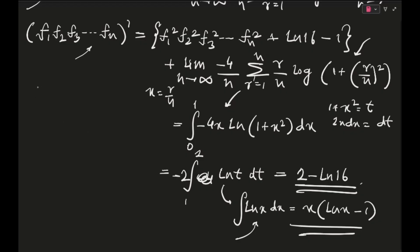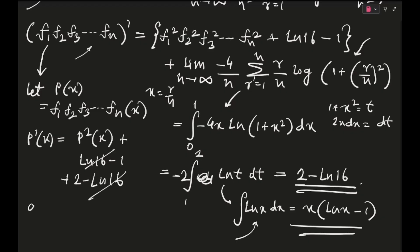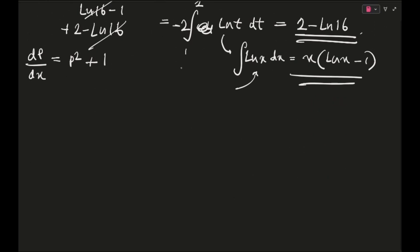To make things simpler, let P(x) = F1·F2·F3·...·FN, the product function. The left-hand side is exactly P'(x) by the product rule of differentiation. On the right-hand side, the ln16 − 1 and the 2 − ln16 cancel each other. So finally the equation simplifies beautifully to: dP/dx = P² + 1. That huge system has been converted into this simple ODE. I hope you like the problem.